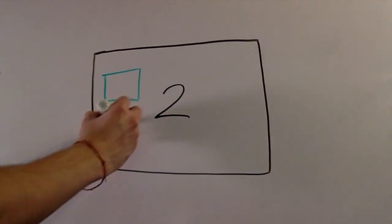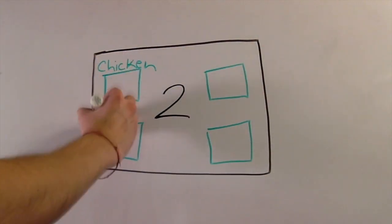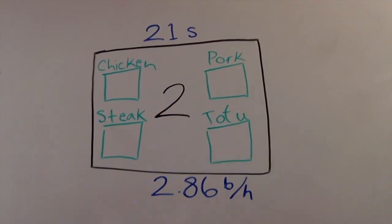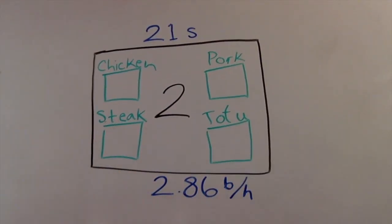Moving on to Station 2, the customer picks their preference of chicken, steak, pork, or tofu. This process takes about 21 seconds with a capacity of 2.86 burritos per minute.